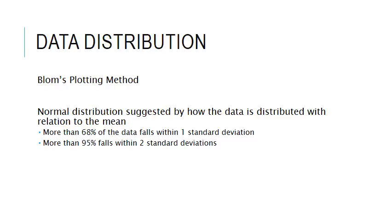Weibull plotting methods showed that there was a linear trend when the data was plotted on normal probability paper. Normal distribution was also shown by the percentage of the data that fell within one, two, or three standard deviations of the mean. For all fatalities in the agricultural industry from 2005 to 2014, about 68% of the data points fell within one standard deviation of the mean, and more than 95% fell within two standard deviations of the mean.